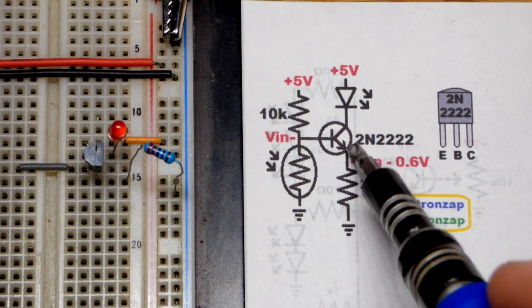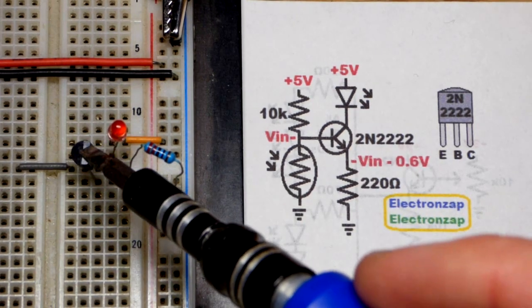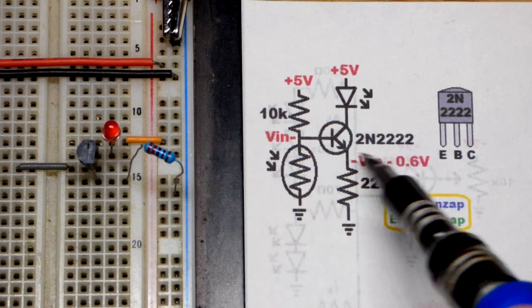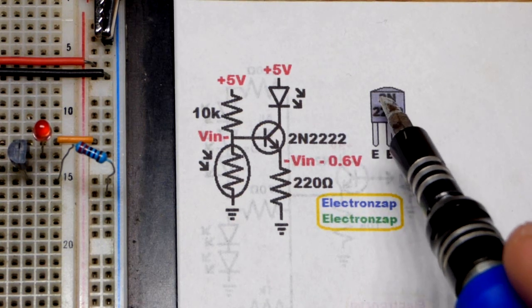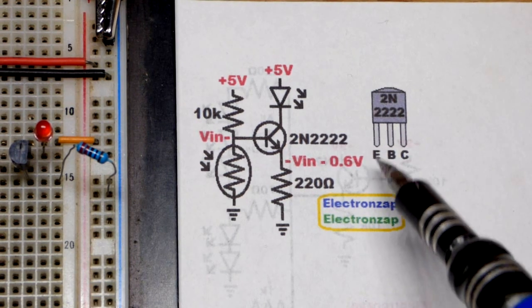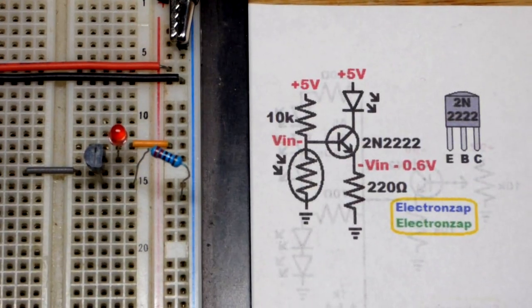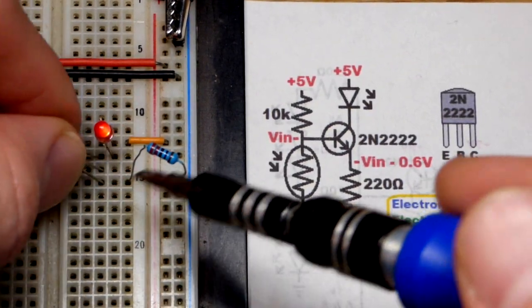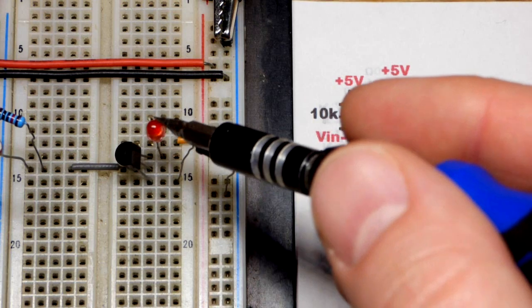Zooming in on the schematic, we have the NPN bipolar junction transistor here. I'm using the 2N2222, and that is the pin layout. If it's an NPN or even a PNP bipolar junction transistor and it starts with 2N, this will probably be the pin layout. The left pin is the emitter, middle pin is the base, right pin is the collector. Because it's facing right, the bottom pin is the emitter, middle pin is the base, and top pin is the collector.